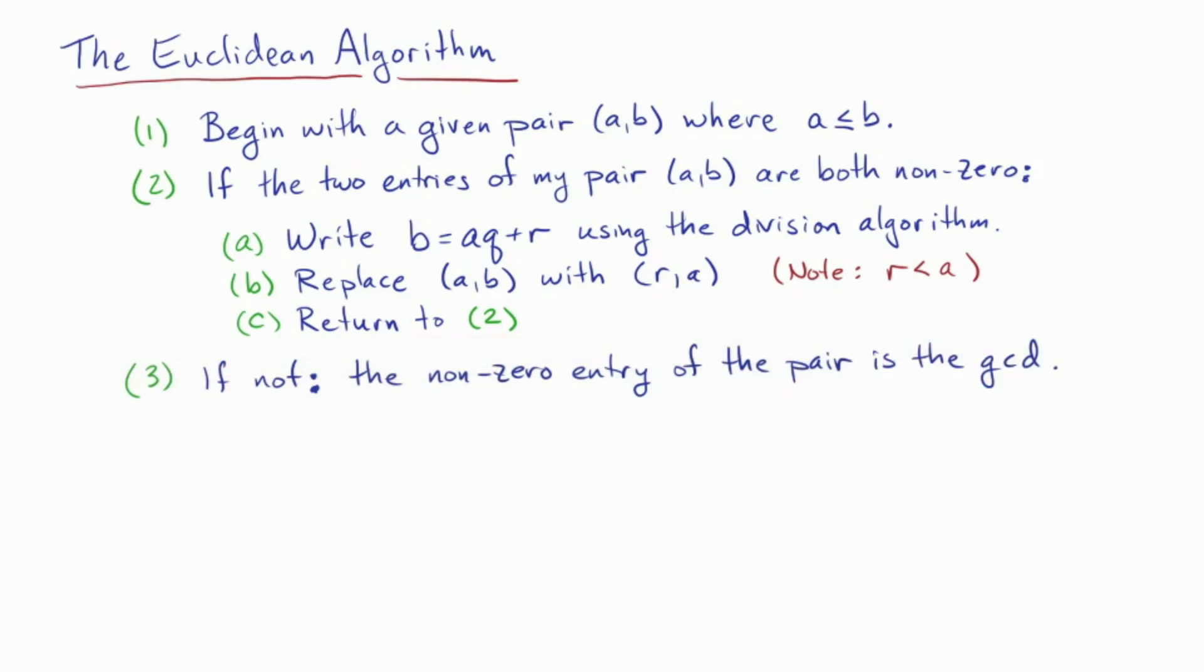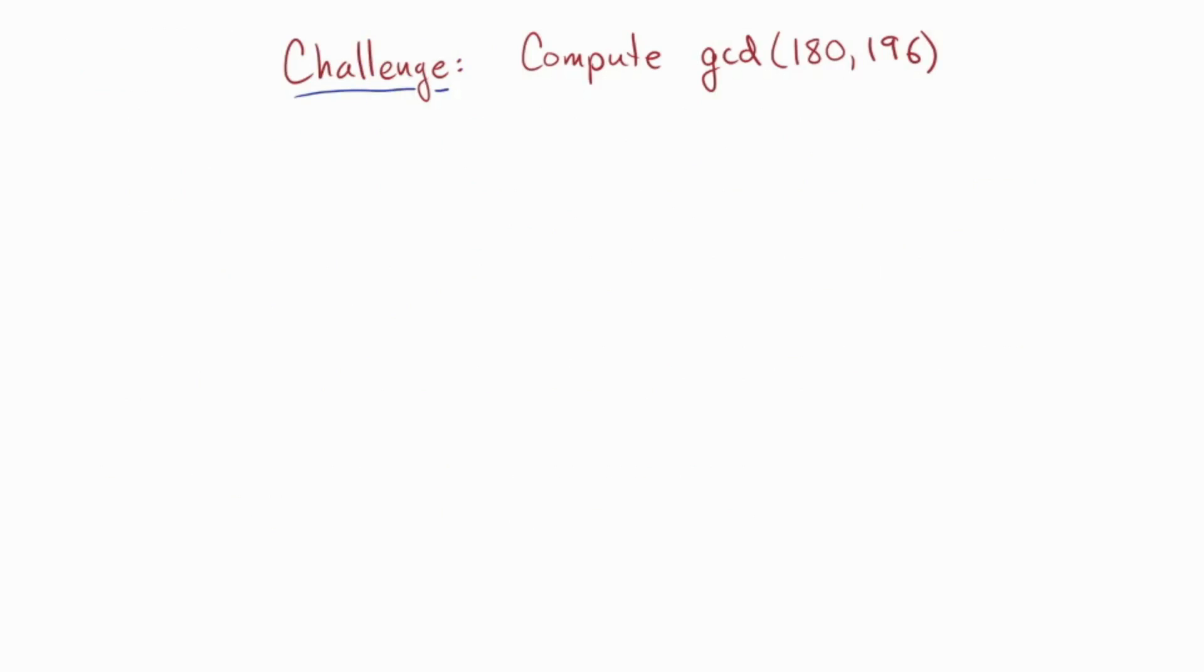Okay, so now I have a challenge for you. Compute the GCD of 180 and 196. So go ahead and pause the video, use the algorithm as it is on the screen, and come back when you've done it. We're back. Okay, so here's how it went for me. So I began with a pair 180 and 196. 196 is bigger, so I wrote it as some number of 180s plus a remainder, which turned out to be 16.